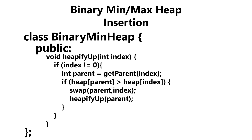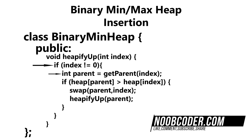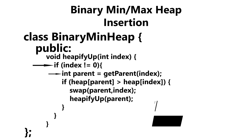Looking at our heapify up method, we get passed in the index of the last node within our heap. We check to see if the index does not equal zero, because if it is equal to zero, that means we're dealing with the root node and there's nothing to heapify. If it doesn't equal zero, we get the index of the parent of the node we're currently at. We check to see if the parent's data is greater than the child node's data, and if it is, we swap the data and make a recursive call passing the parent index — effectively continuing until we reach the root node.